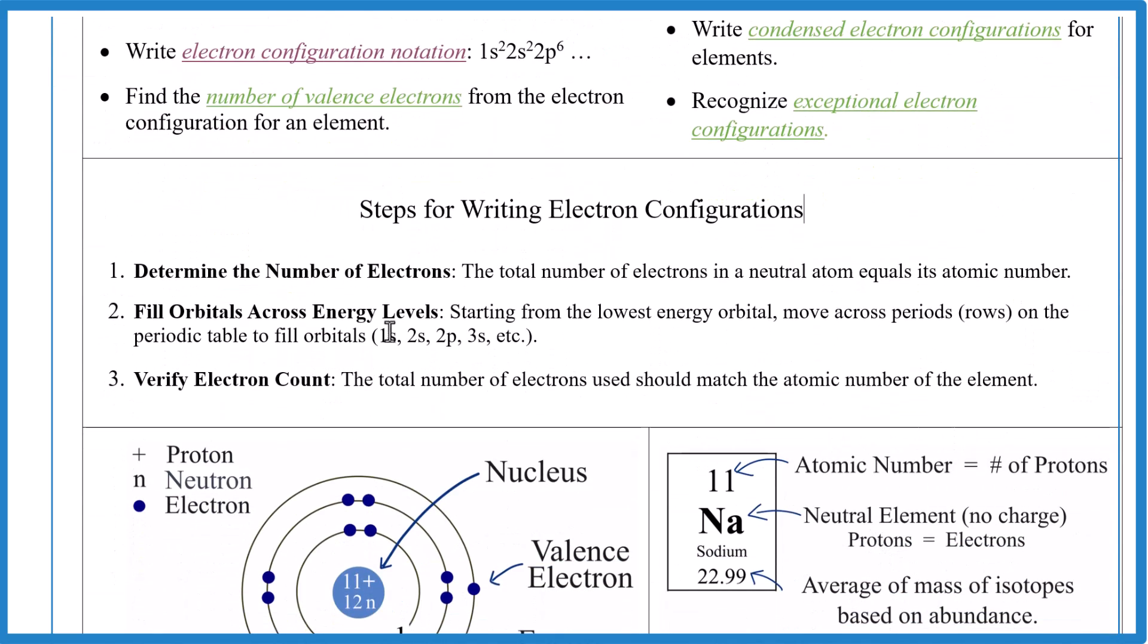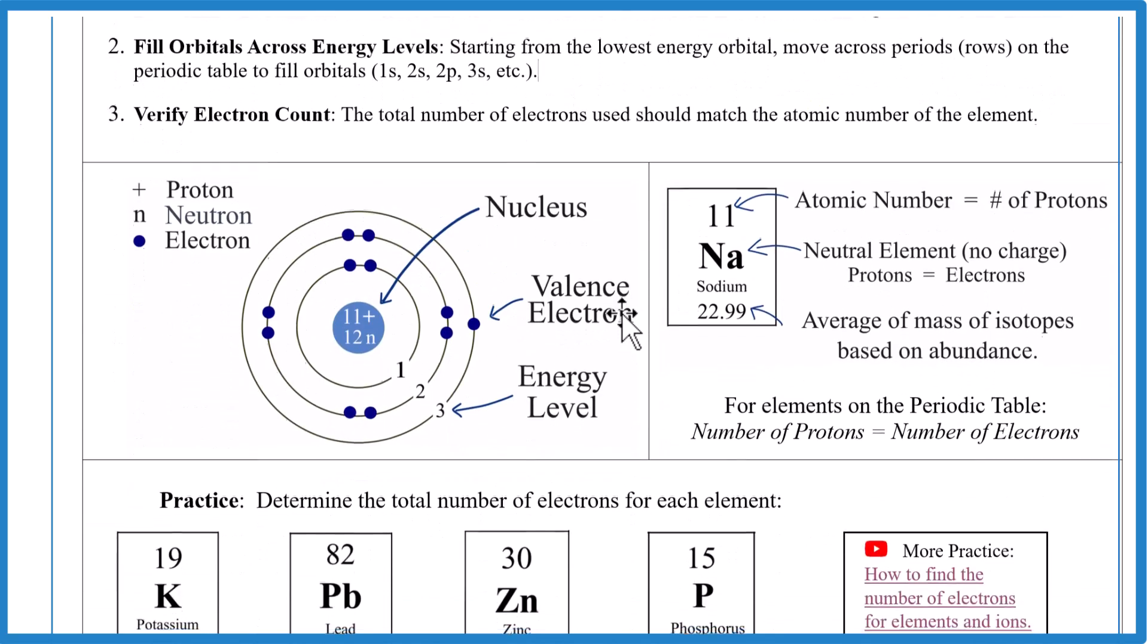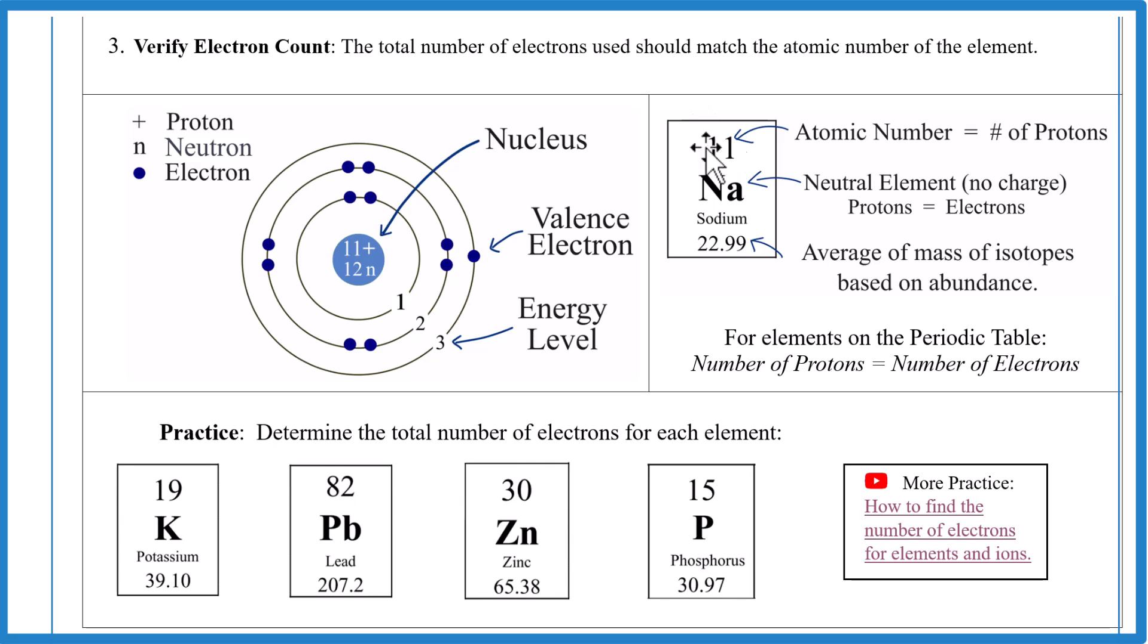First up, steps. These are the steps. You have to be able to determine how many electrons there are. But what's nice is if we go to the periodic table here, the atomic number right here, that's the number of protons. It's also the number of electrons for all of the elements on the periodic table. They're neutral. So pause. Try this. How many total electrons does each one of these elements here have? 19, 82, 30, 15. Because the atomic number equals the number of protons, and since all the elements on the periodic table are neutral, it equals the number of electrons.